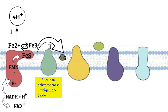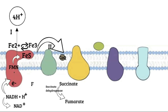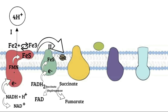Complex II is also known as succinate dehydrogenase ubiquinone oxidoreductase. Complex II contains succinate dehydrogenase, which converts succinate to fumarate in the TCA cycle. This produces FADH2, which donates an electron and gets converted to FAD. The electron is accepted by the FES complex, which subsequently donates it to CoQ. Thus, CoQ receives electrons from both Complex I and Complex II and is itself reduced to QH2. No proton transport takes place across Complex II.